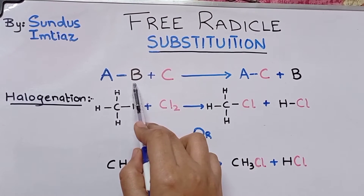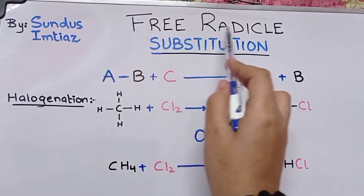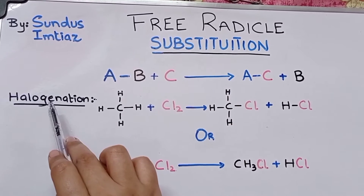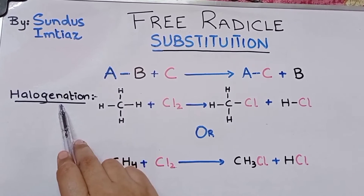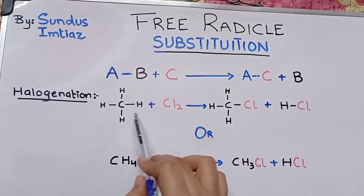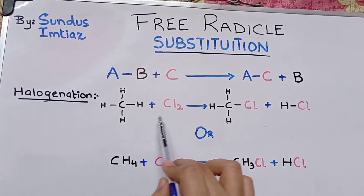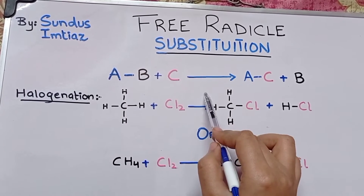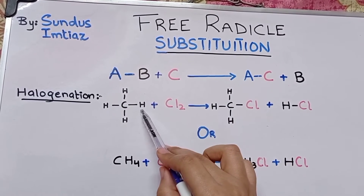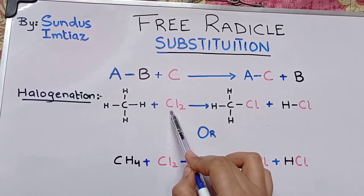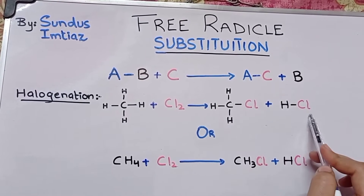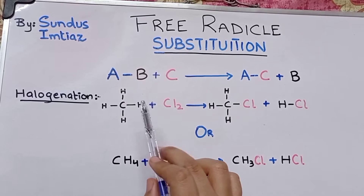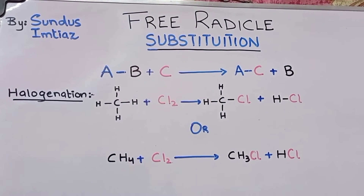This is what we call a substitution reaction. It is also called a single displacement reaction because only a single compound is displaced. An example of free radical substitution reaction is the halogenation of alkanes, where the hydrogen in an alkane is replaced with a halogen group, producing HCl.